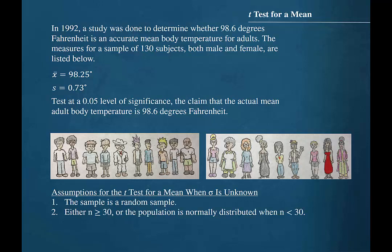When we conduct a hypothesis test for a mean when the population standard deviation is unknown, there are some assumptions that must be verified. One, the sample is a random sample, and two, either the sample size is greater than or equal to 30, or the population is normally distributed when the sample size is less than 30.